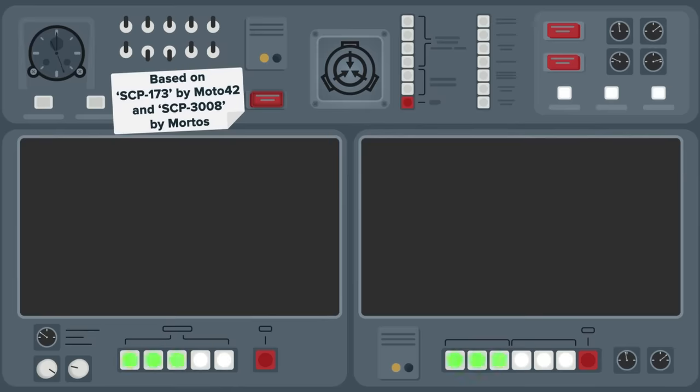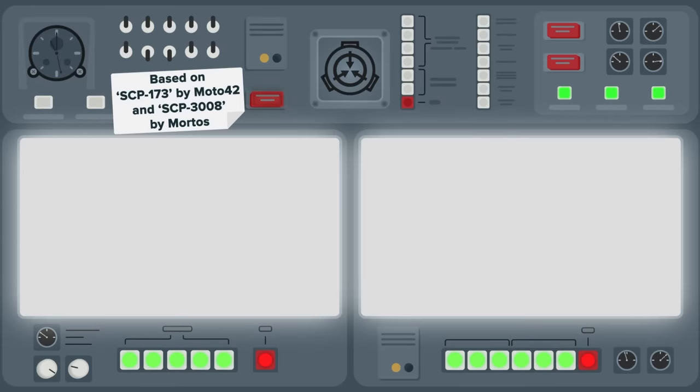Now go and check out Real Ikea Manager Goes Mad With Power in SCP-3008, and SCP-096 vs SCP-173, for more videos featuring the anomalies featured in today's tale.